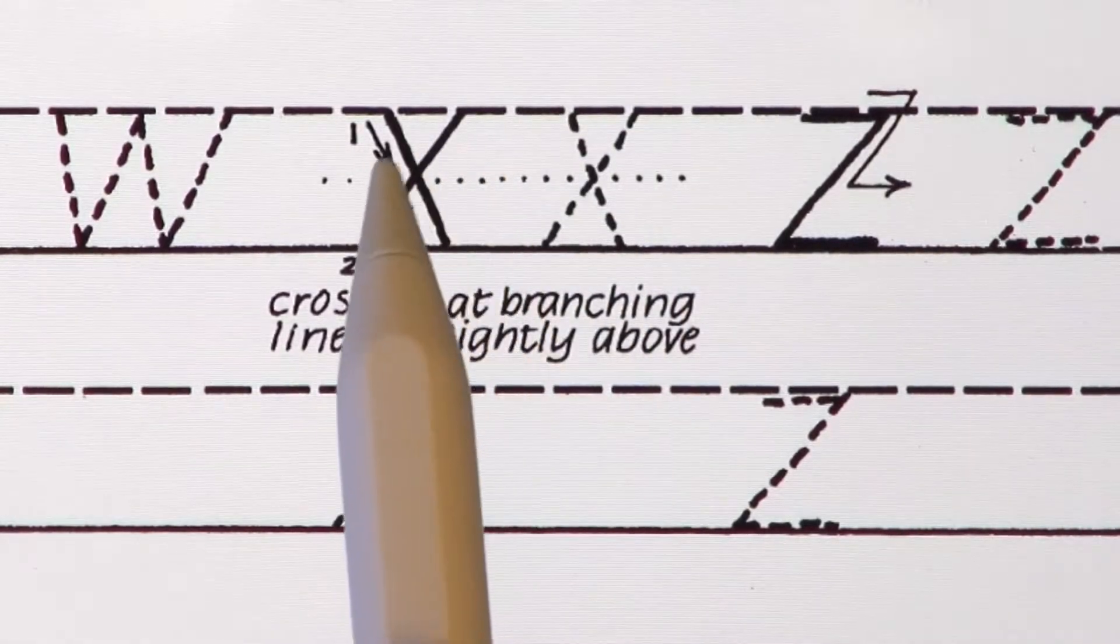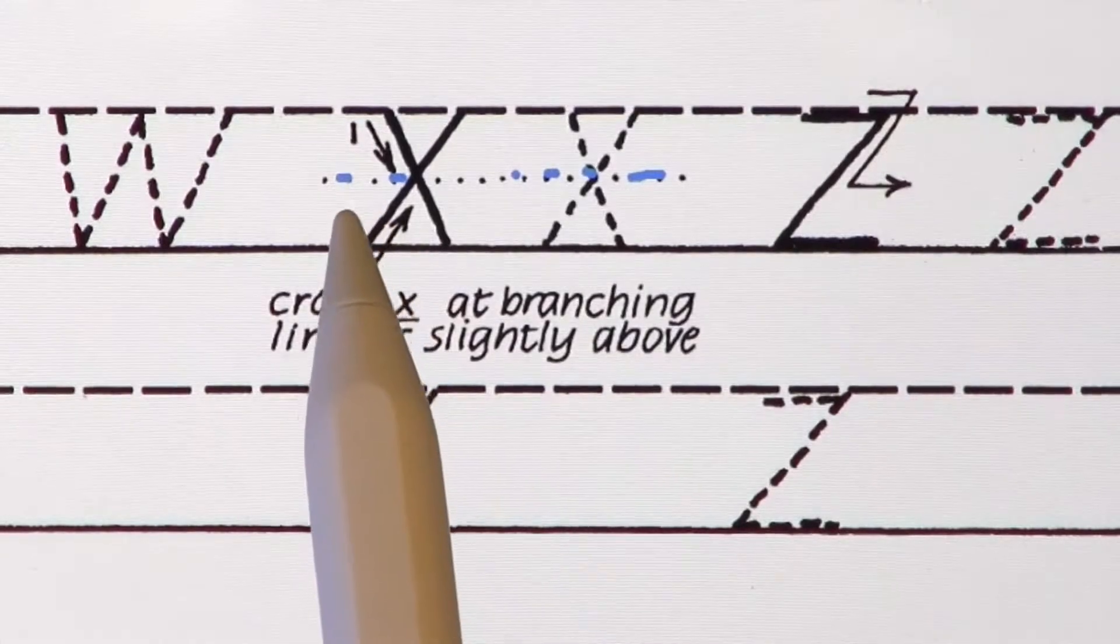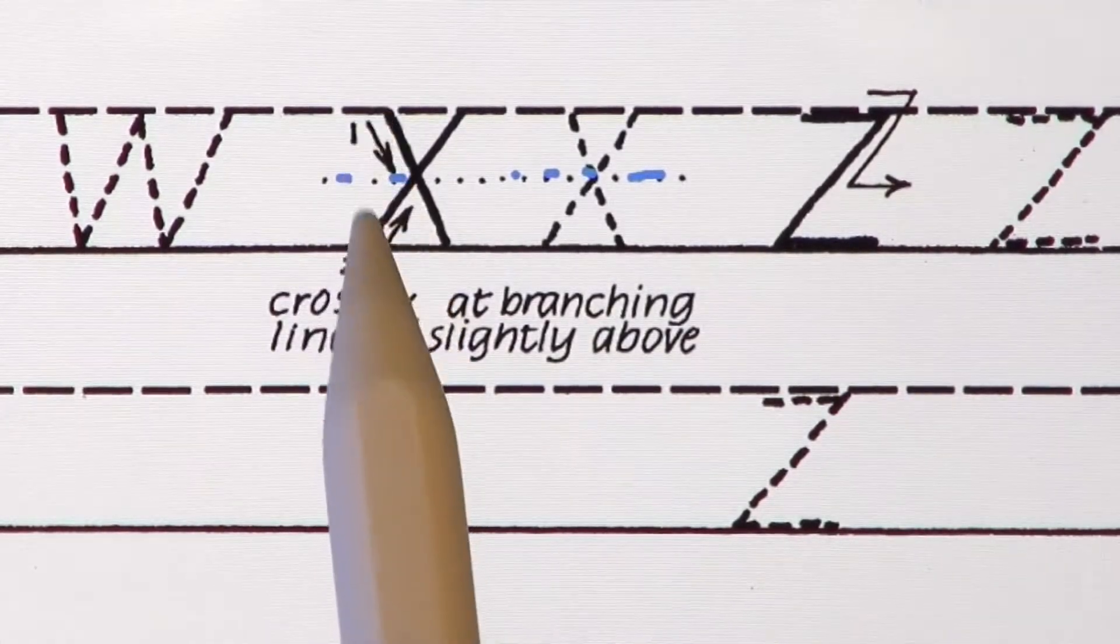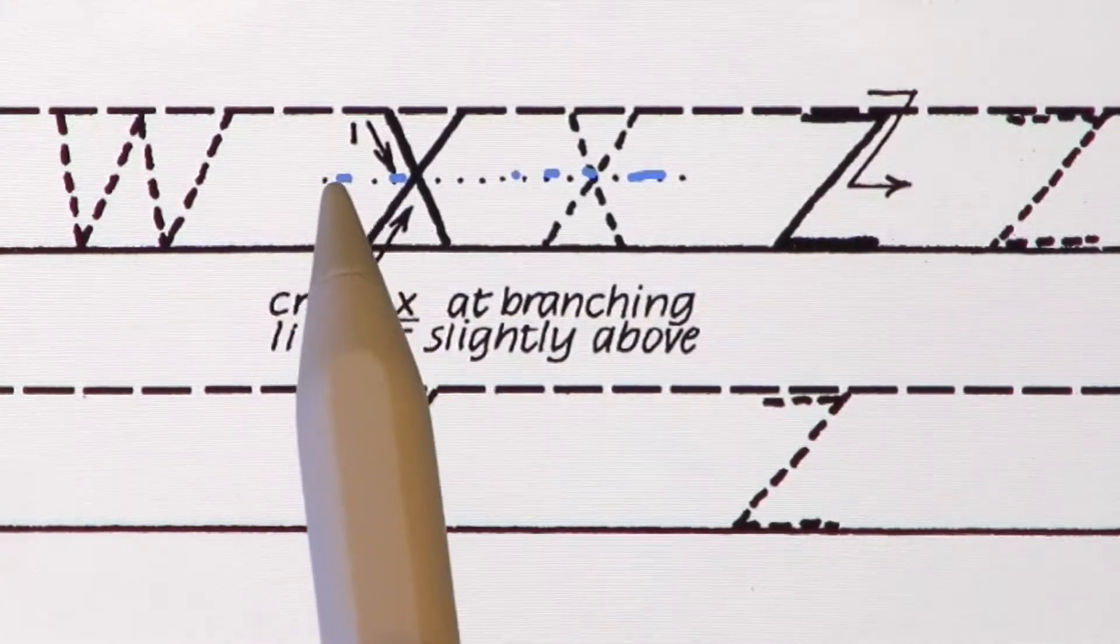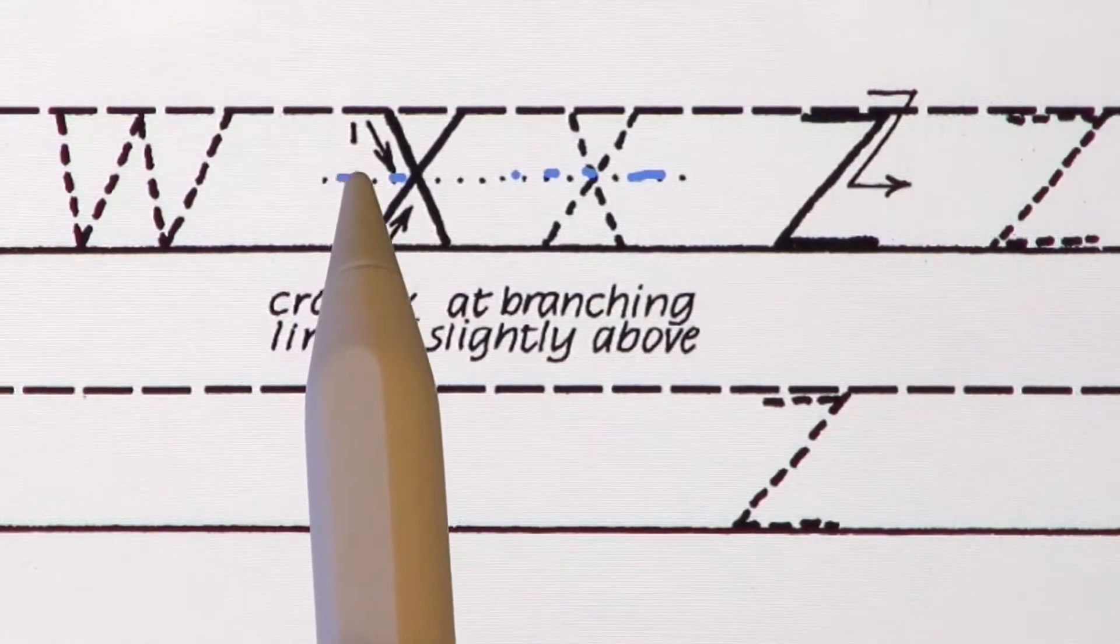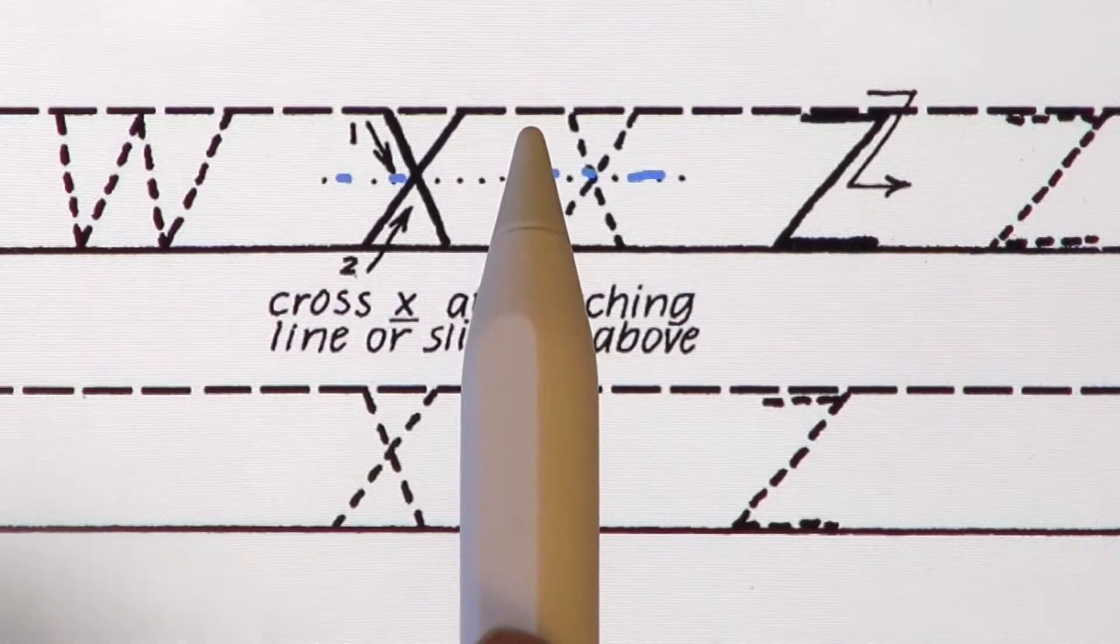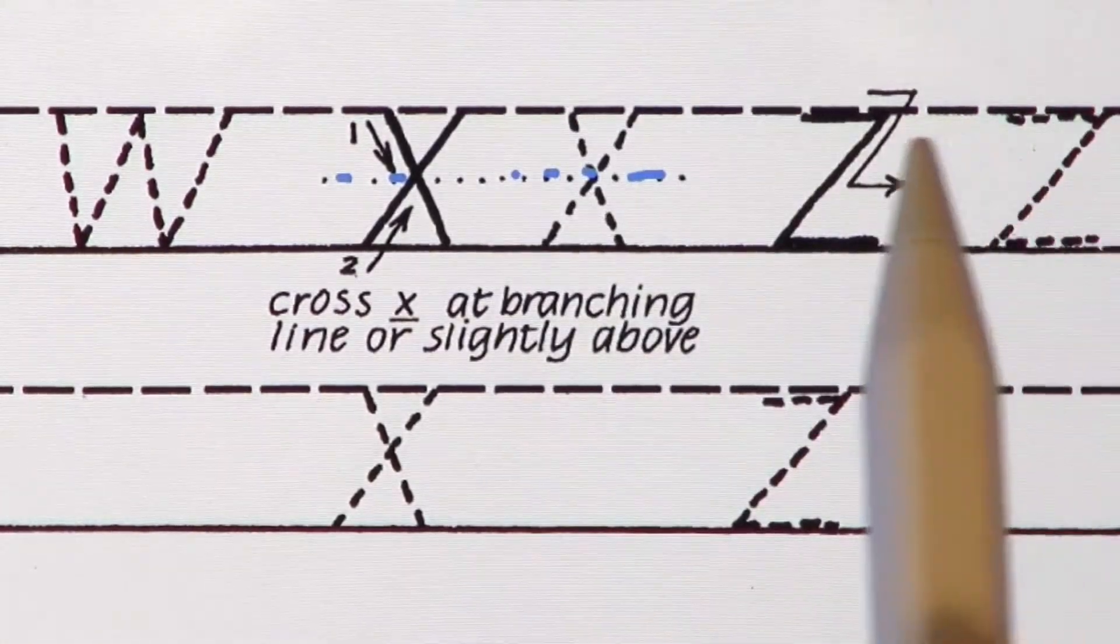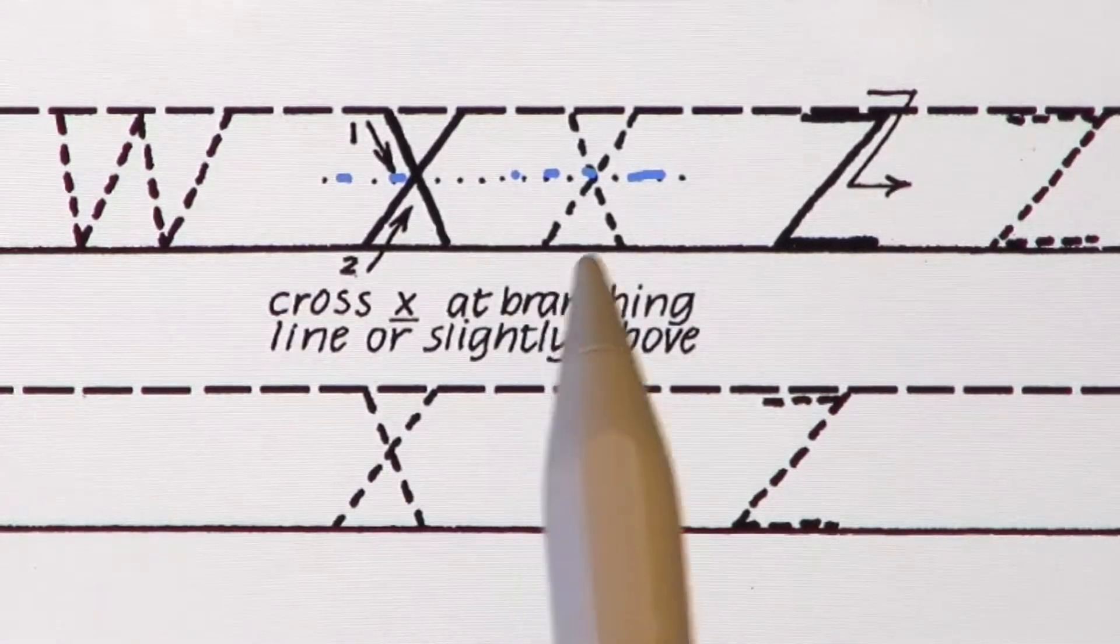You notice that where the letter strokes cross is right at the midpoint between the baseline and the waistline. We also call this the branching line, and we'll see this in action when we look at the arch letters H, M, N, and R. For now, let's focus on straight diagonal strokes.